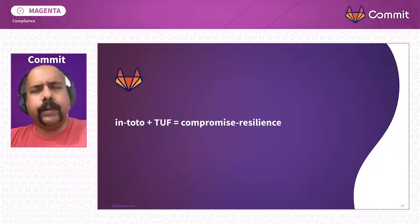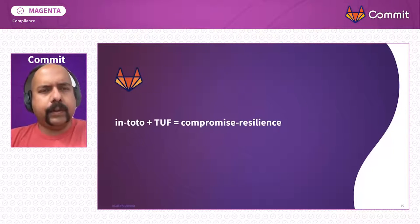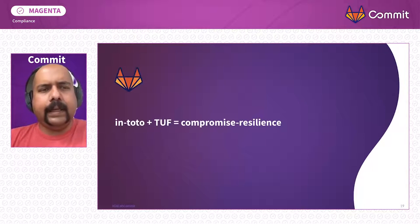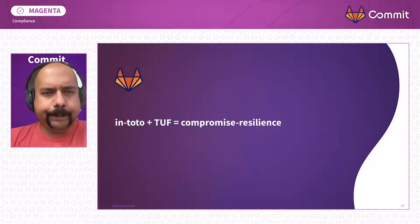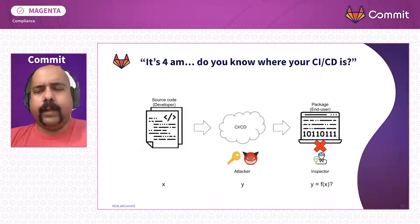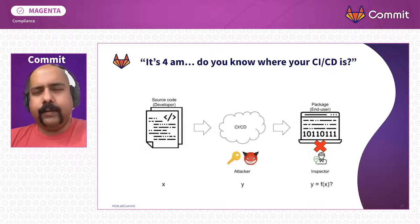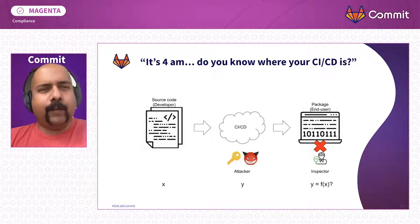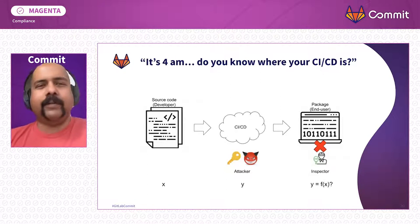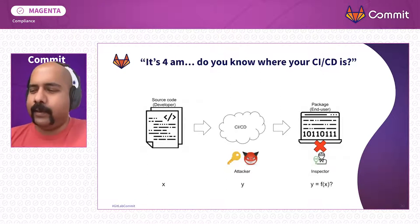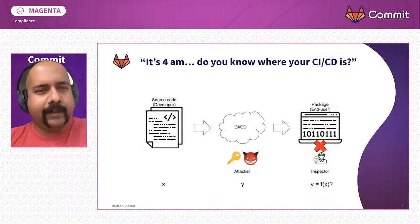How do we do this? We're going to propose using two pieces of technology called In-toto and TUF that I claim get you this property. It's 4 a.m. — do you know where your CI/CD is? Imagine someone pitches you at 4 a.m. and says it looks like a pipeline released something malicious. Do you know what happened?